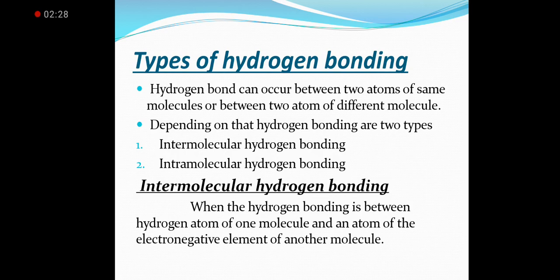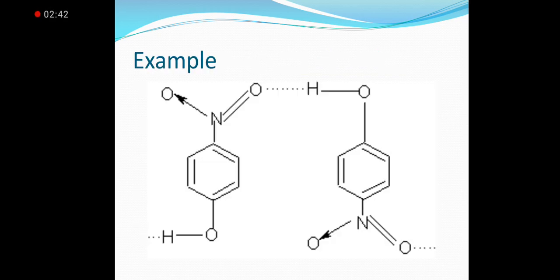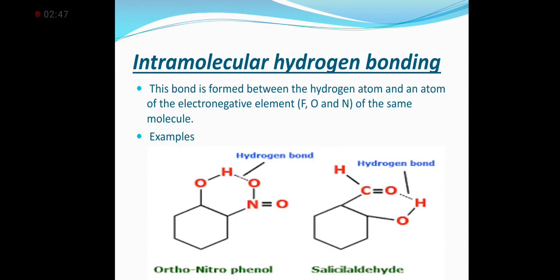Intermolecular hydrogen bonding occurs when the hydrogen atom of one molecule bonds with the electronegative atom of any other molecule. This is an example of intermolecular hydrogen bonding.